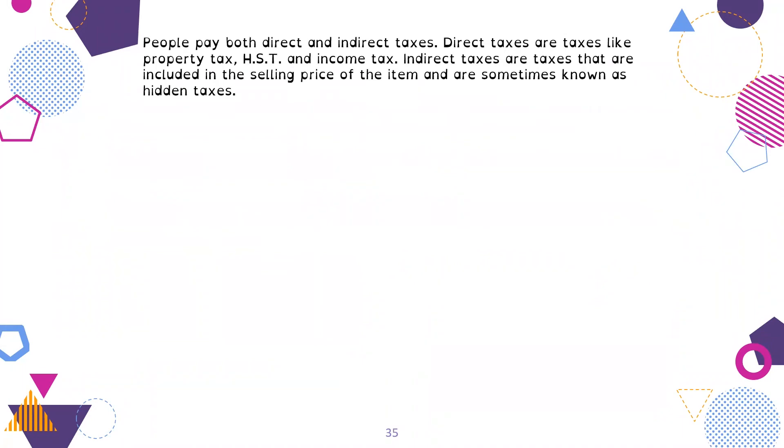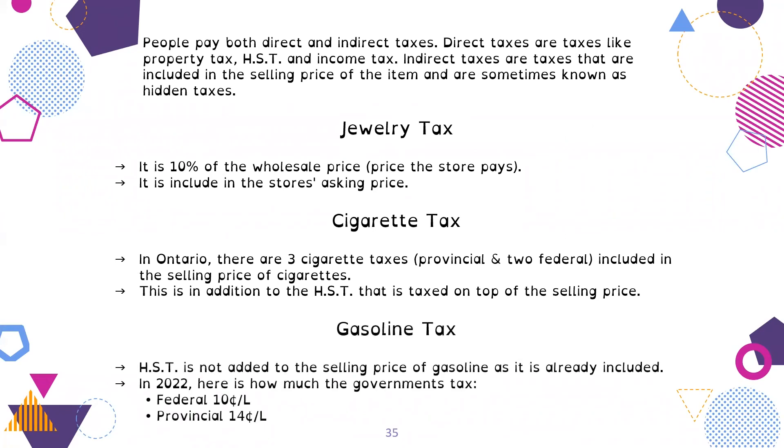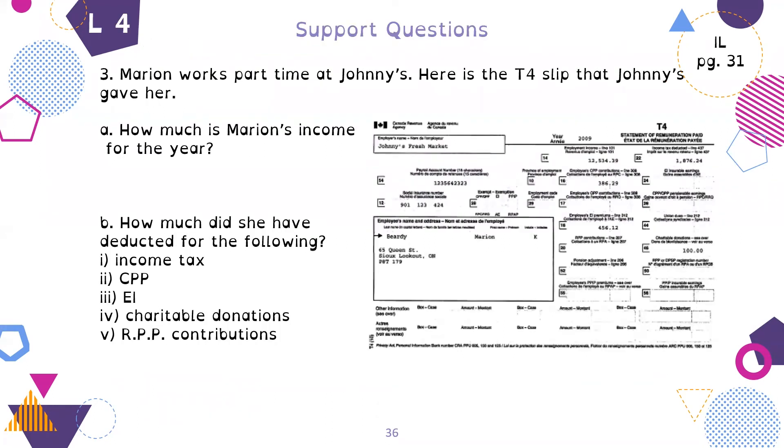People pay both direct and indirect taxes. Direct taxes are taxes like property tax, HST, and income tax. Indirect taxes are taxes included in the selling price of an item and are sometimes known as hidden taxes. Jewelry tax is 10% of the wholesale price. Cigarette tax, in Ontario there are three secret taxes, a provincial and two federal ones, included in the selling price in addition to HST. And gasoline tax. We don't pay HST on gasoline, it's already included in the selling price. Currently there's a federal 10 cents per liter tax and provincial 14 cents per liter tax.